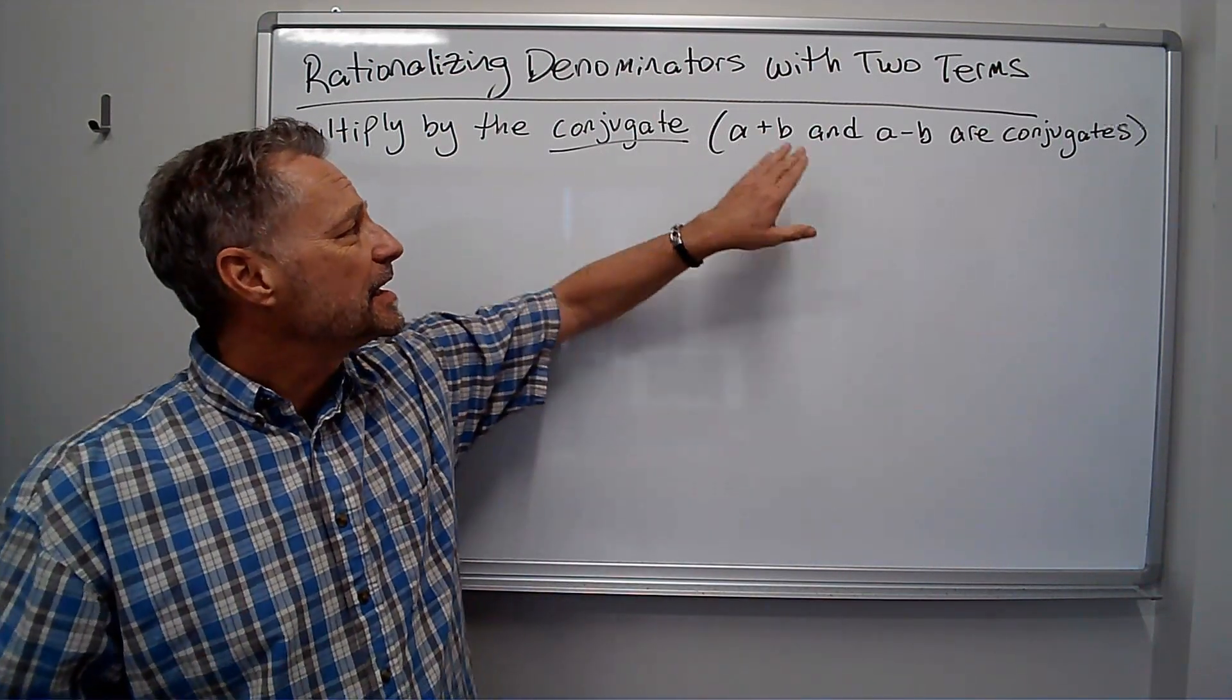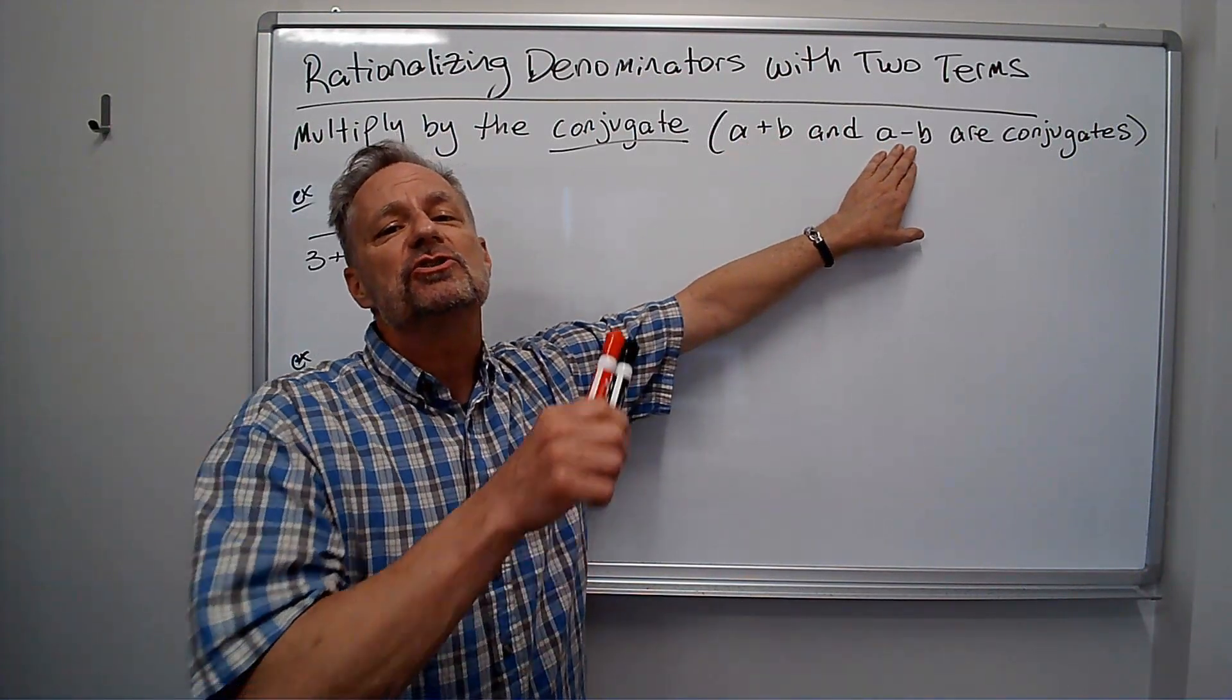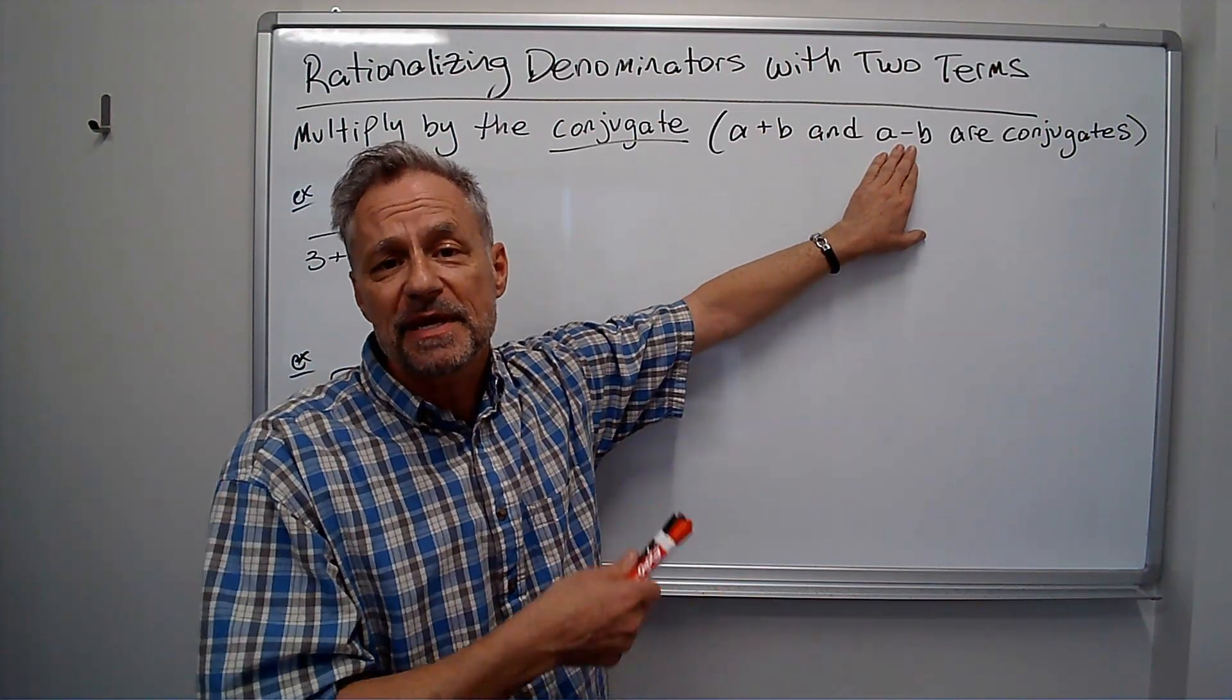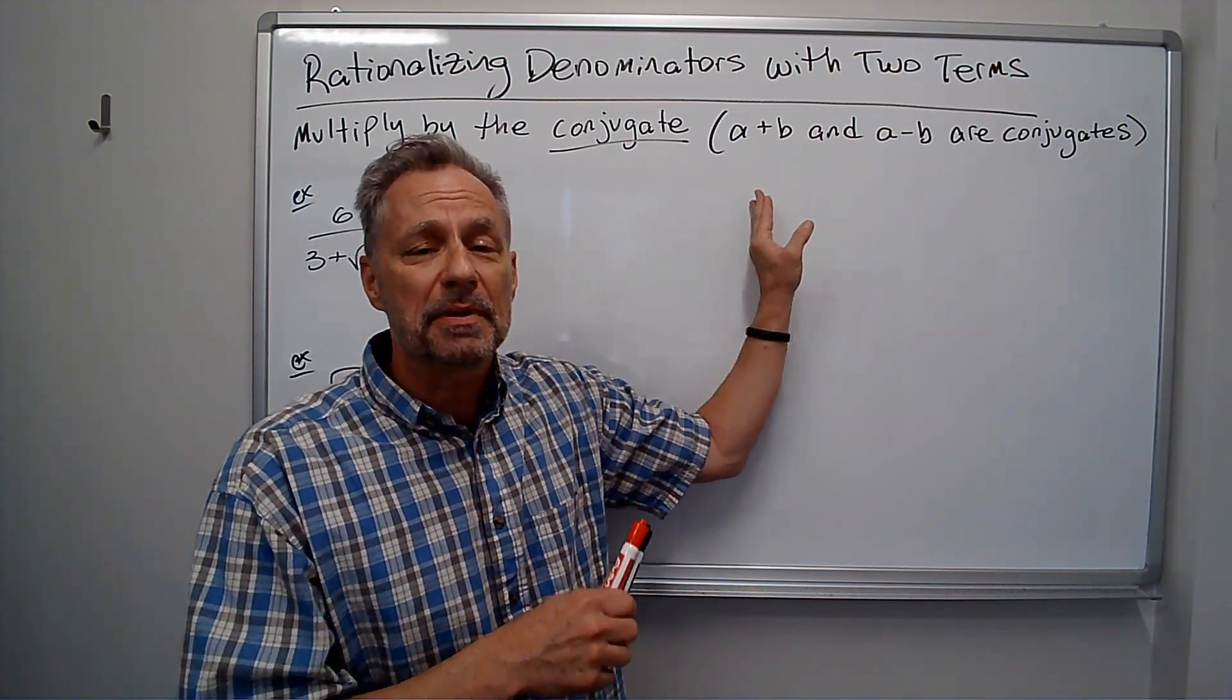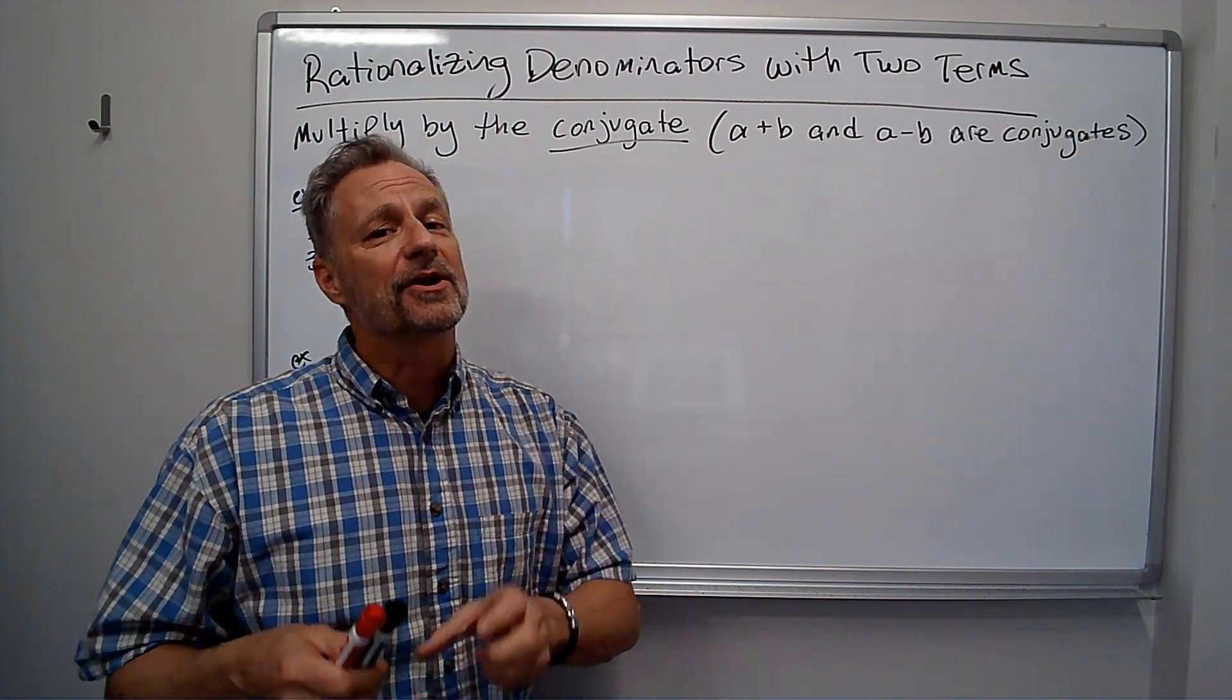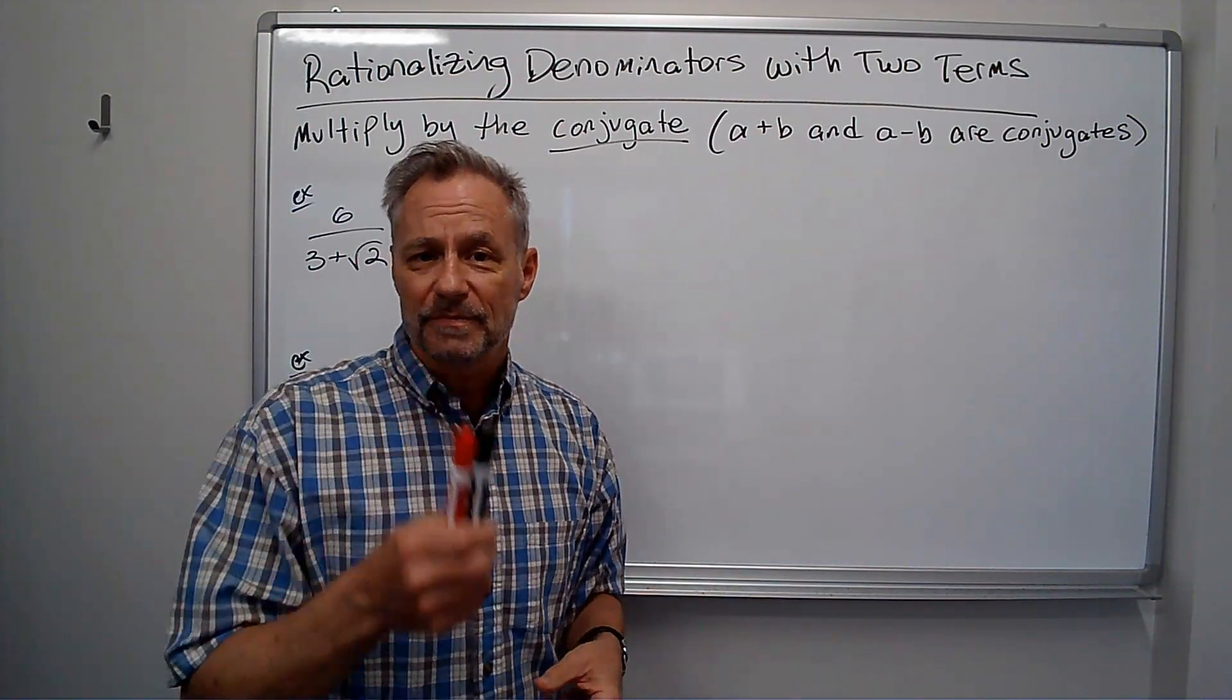The conjugate is, if I have a plus b, you keep the a and the b, you just change the sign in the middle. So the conjugate of a plus b is a minus b, the conjugate of a minus b is a plus b. If I'm trying to rationalize the denominator, I multiply by the conjugate of the denominator, both top and bottom. Let's look at some examples.